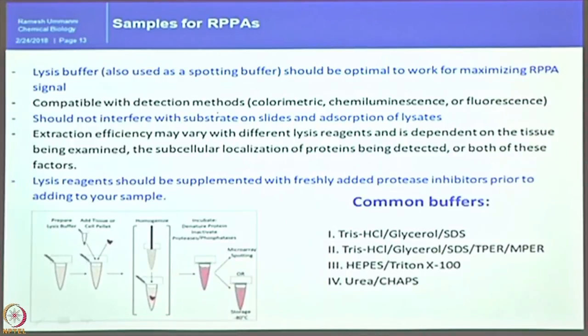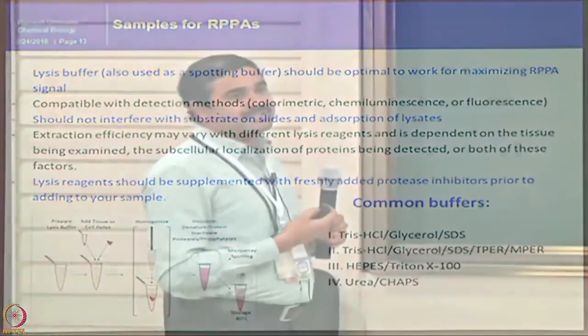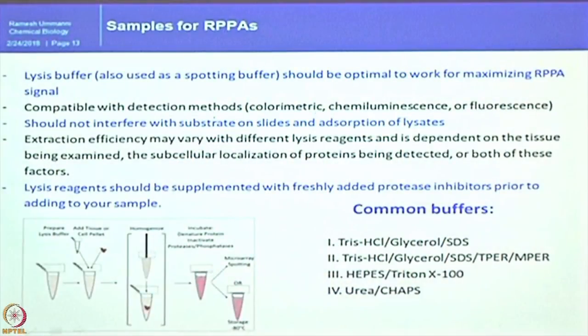A critical point is what kind of buffer to choose, since not all proteins in all samples can be solubilized by a single buffer — this is a major limitation in the array approach. The lysis buffer should be optimal to maximize the RPPA signal and should not interfere with visualization using any labeling system, whether secondary antibodies with IR, HRP, alkaline phosphatase labeling, or direct Cy3 or Cy5 labels. It should also be compatible with calorimetric, chemiluminescence, and fluorescence detection methods.